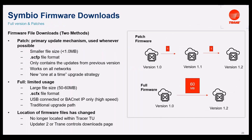Full version and patches — we have two ways to upgrade our Symbio controllers. The first one is the patch. It's the primary update mechanism; use it whenever possible. These patches are smaller file sizes, less than one megabyte. The format is SCFP and only contains the updates from the previous version to the new version.